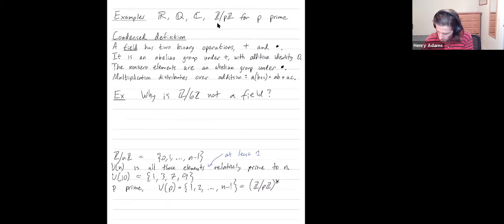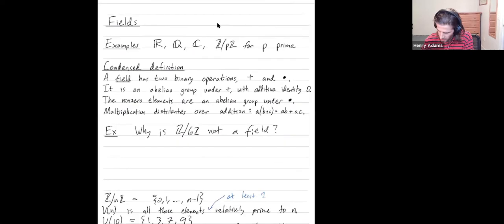And let me give myself more room. So why is Z mod 6Z not a field? Additive identity is zero.